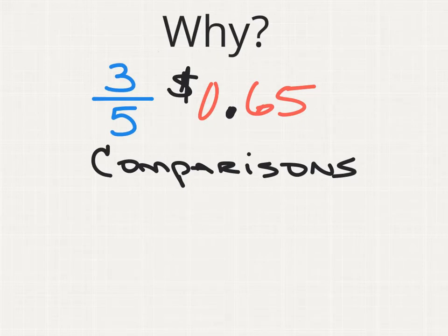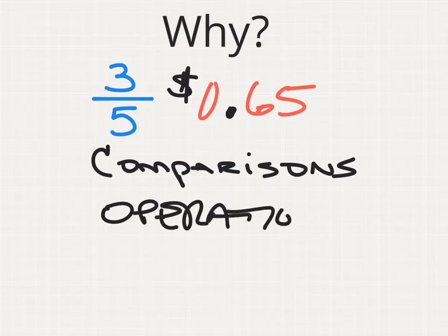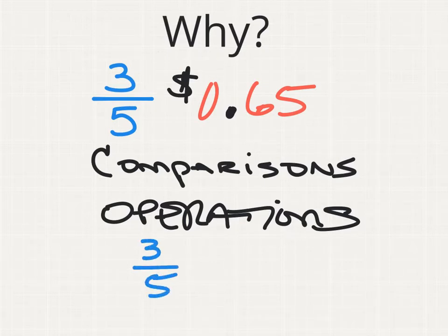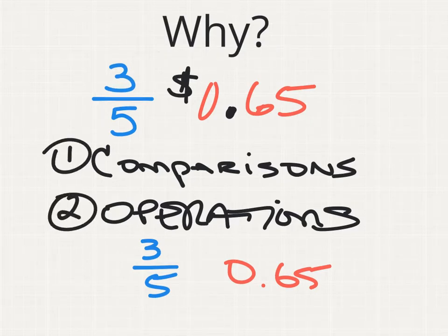To make easier comparisons between two numerical values, it would be much easier if they were both written in the same form. So, rewriting that fraction as a decimal would then give me two decimals I could compare to each other, and that would be very helpful. Another reason would be to perform operations. If I want to add, subtract, multiply, or divide, if I have a fraction and a decimal, I won't be able to do those operations.